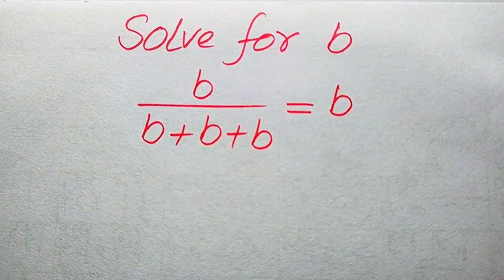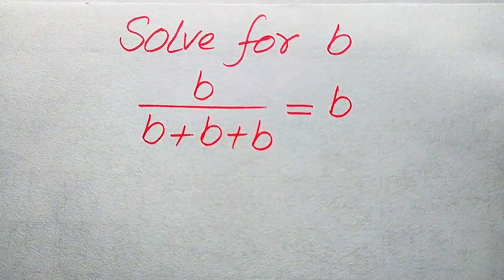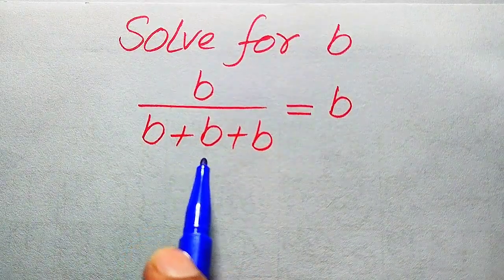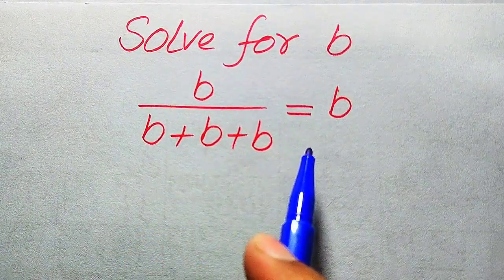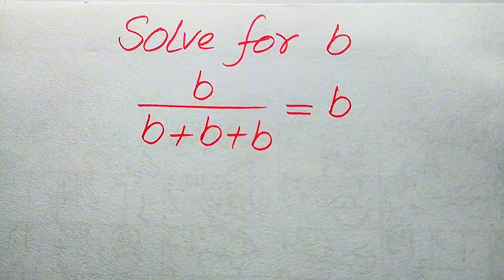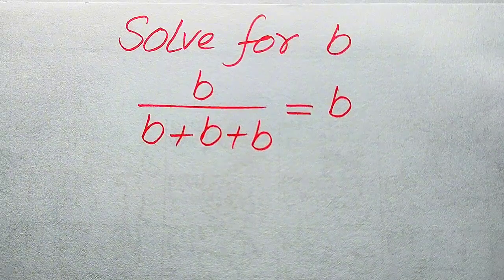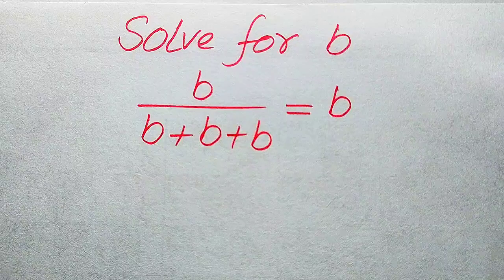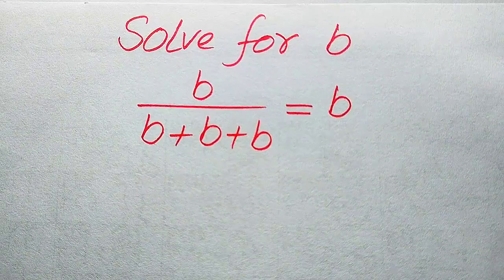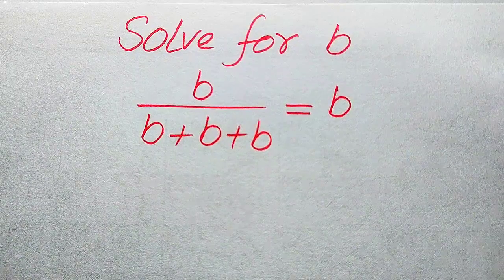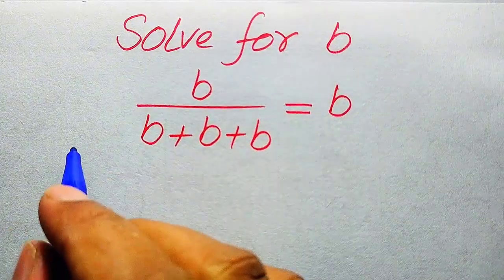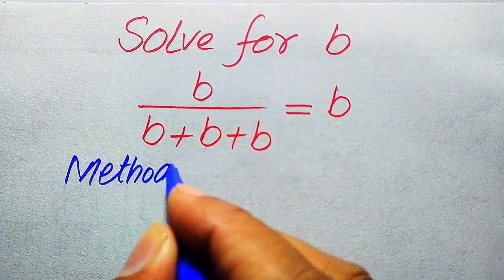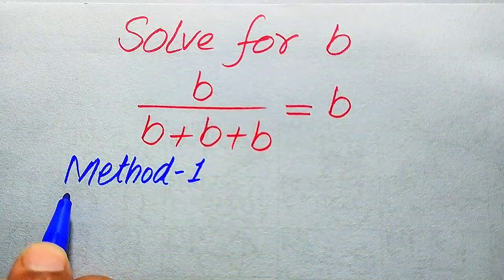Hello everyone. How to solve this problem for the values of b if we have b divided by b plus b plus b equals b, and we solve this problem for all the values of b. First we need to find all the roots of this equation, and at the last we will verify which of the roots are solutions and which are extraneous roots. We will solve this problem using two methods.